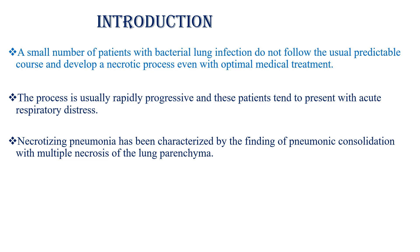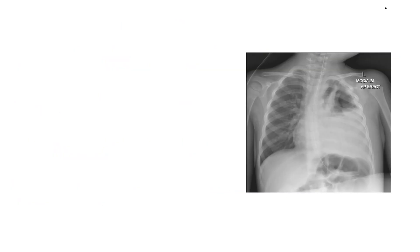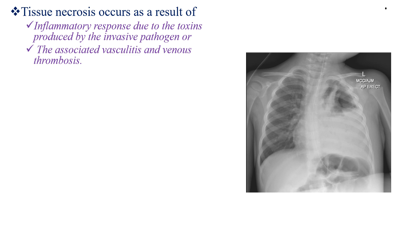Necrotizing pneumonia has been characterized by the finding of pneumonia consolidation with multiple necrosis of the lung parenchyma. This necrotic focus might result in a lung abscess if localized, or pulmonary gangrene if involving an entire lobe. In necrotizing pneumonia, tissue necrosis occurs as a result of different reasons: direct bacterial invasion, inflammatory response due to toxins produced by the invasive pathogen, or associated vasculitis and venous thrombosis.